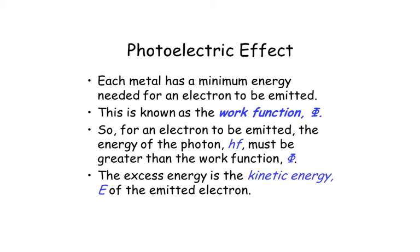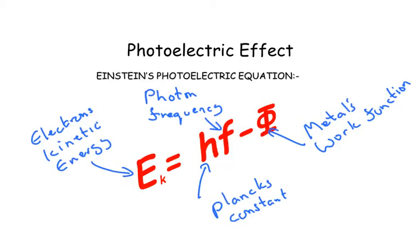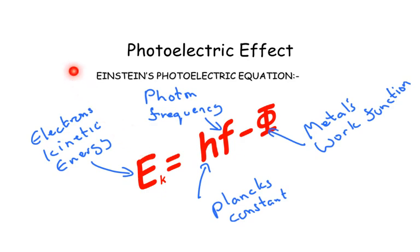The excess energy is the kinetic energy of the emitted electron. This is Einstein's photoelectric equation: EK is the electron's kinetic energy as it flies off, h is Planck's constant multiplied by the photon frequency — that's the frequency of the incoming light — minus the metal's work function. The photon energy must be greater than the work function for the electron to fly out of the metal.